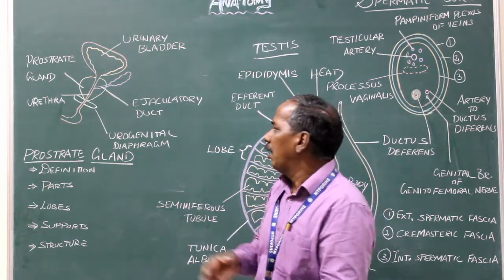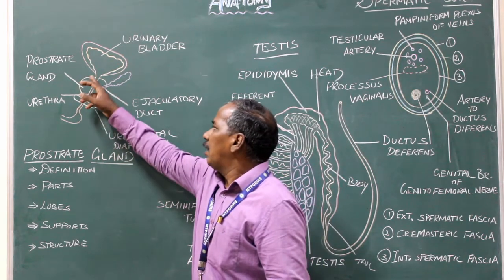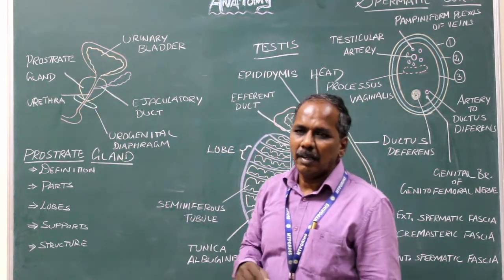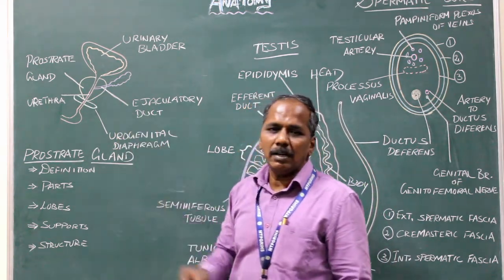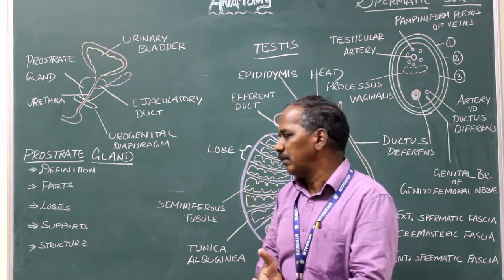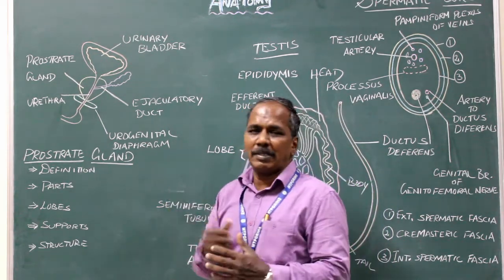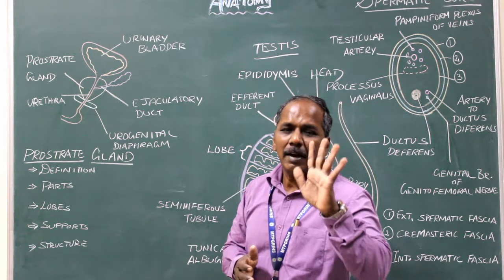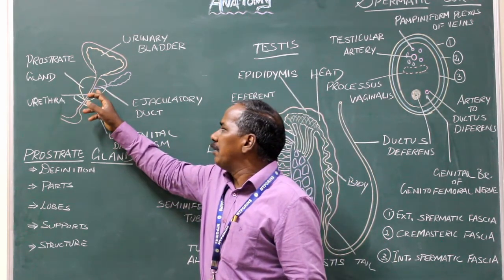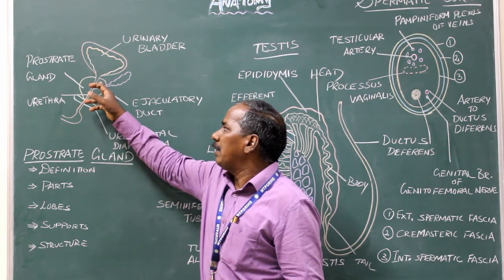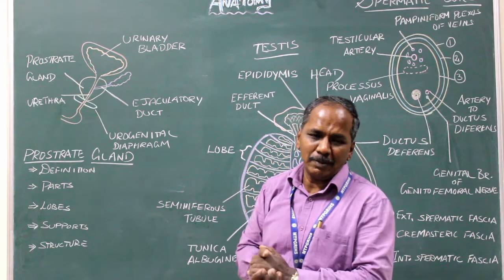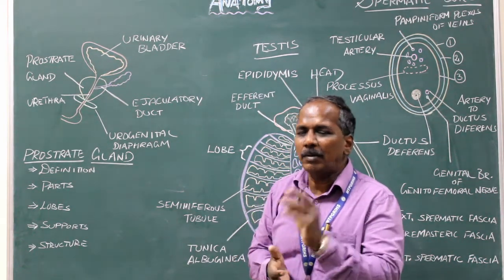Parts: it has an apex, a base, and four surfaces — anterior, posterior, and two inferolateral surfaces. Lobes: it consists of five lobes — number 1, anterior lobe; number 2, posterior lobe; number 3, median lobe; and two lateral lobes. So there are totally five lobes.